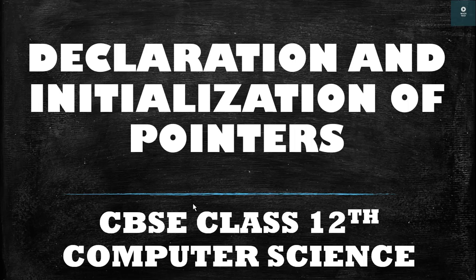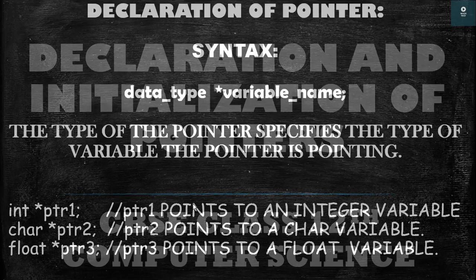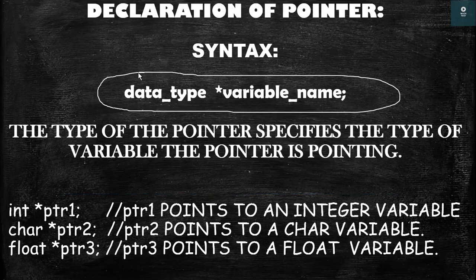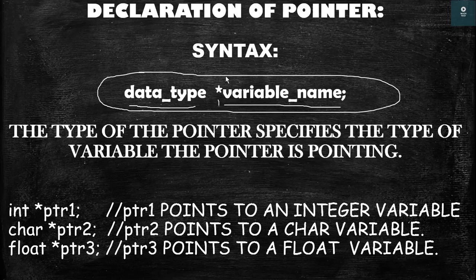Regarding declaration of a pointer, the syntax is similar to the declaration of a variable, because a pointer is also a variable. You write the type first, then a star sign, and then the variable name — that is, the pointer name. The only addition is the star sign; everything else is the same as declaring a variable.